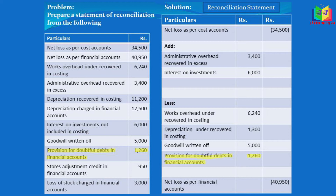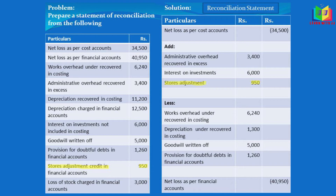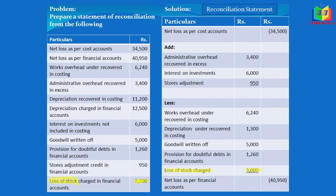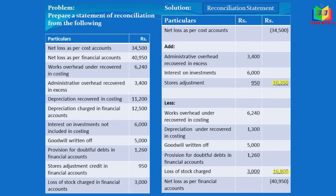Provision for doubtful debts in financial account is also an expense — it is understated in the cost book, so understated expenses will increase the profit; to correct that we subtract it. Stores adjustment credit in financial book is credited income, understated in cost book, so we add it. Loss of stocks charged in financial account is understated in cost book, which increases the profit, so we subtract it.